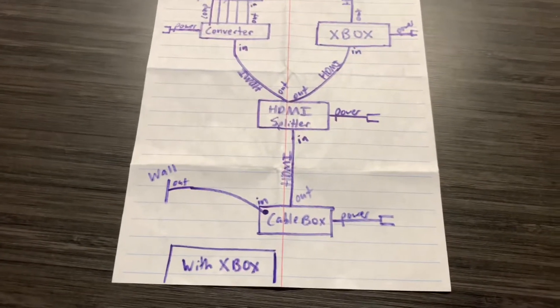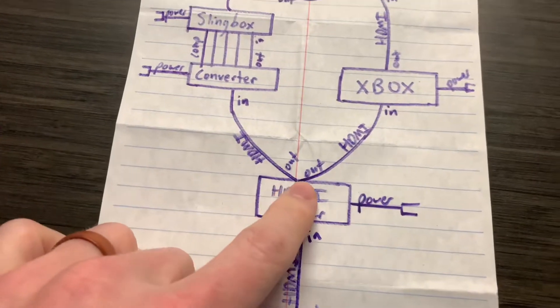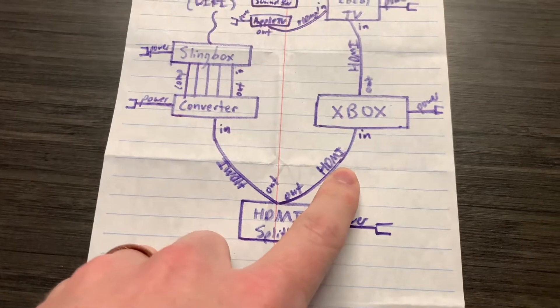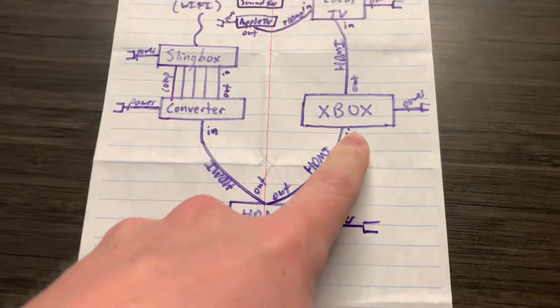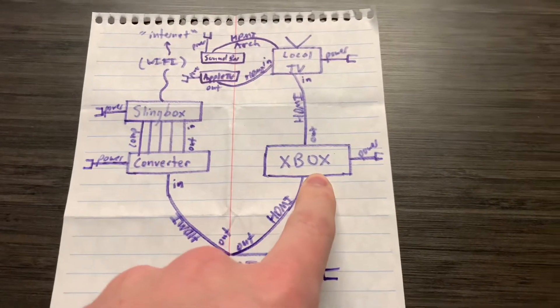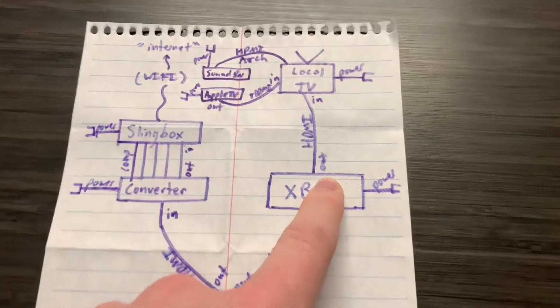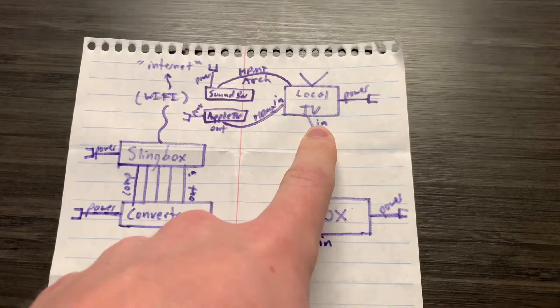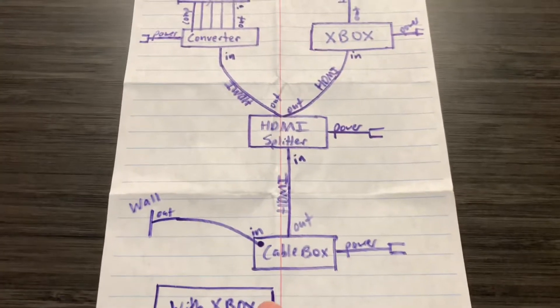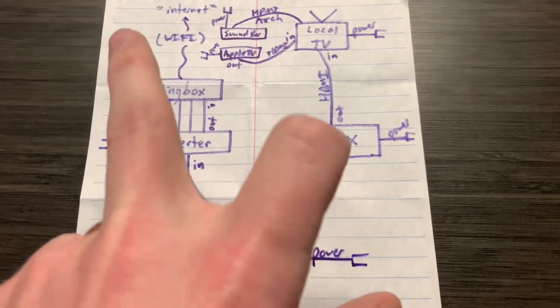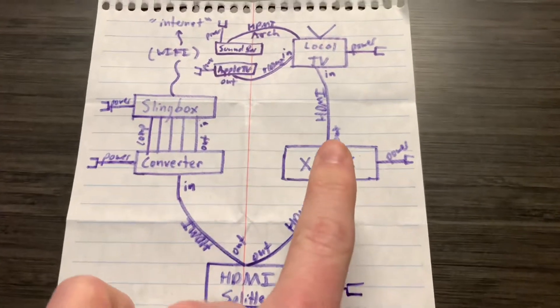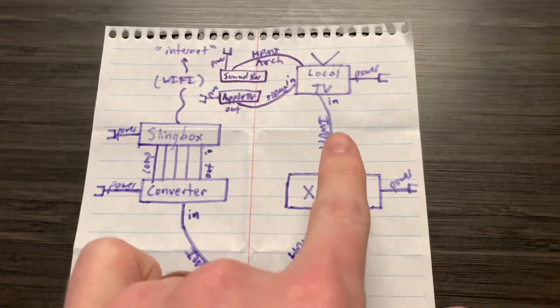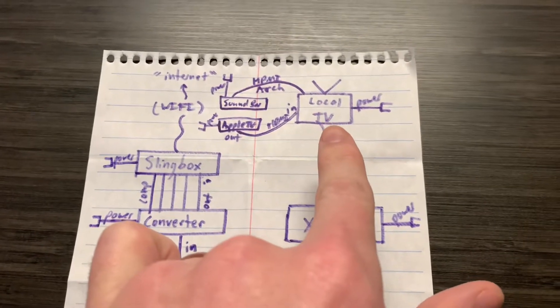So what I did was this is still all the same, but this splitter goes out two ways. One way is an HDMI into the local Xbox and then out of the local Xbox is an HDMI into the local TV. So the signal basically goes from the cable box through the splitter two ways, one to the Slingbox, one to the Xbox through the Xbox, which can do cable TV through into the local TV.